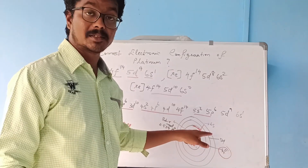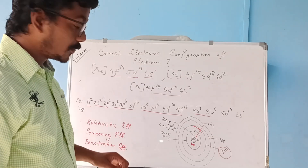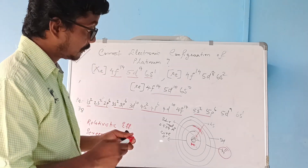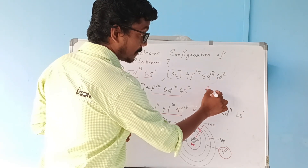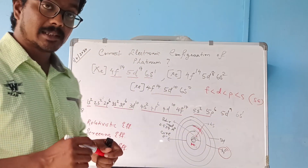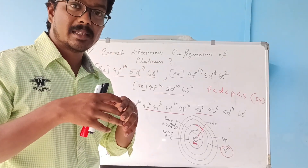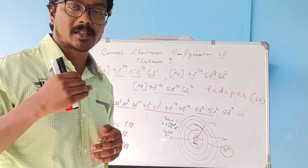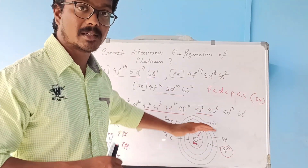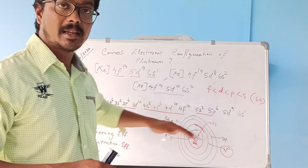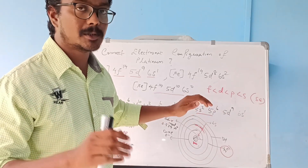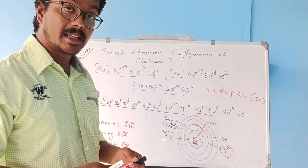The order of screening effect is: f less than d less than p less than s. Screening effect is the phenomenon where core electrons shield the valence electrons from the nuclear force of attraction. If the nucleus attracts the 6s electrons, the 4f and 5d electrons will shield that nuclear force of attraction. However, the screening effect of the f sub-shell is very, very low because of its shape.